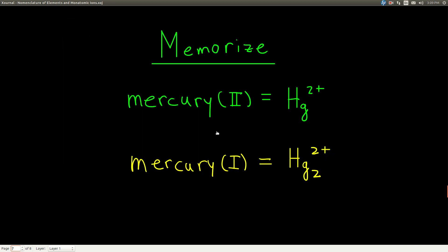There is one exception you just have to memorize, and that's mercury. Mercury(II) is just what you'd think - a mercury atom with a positive two charge; it lost two electrons. However, mercury(I) is strange. It is not Hg with a plus one charge. Rather, there are always two mercury atoms together - kind of like a diatomic cation. Each mercury atom has a plus one, so overall there's a plus two charge. You will not see Hg⁺ - that's wrong. If it's mercury(I), it will always be Hg₂²⁺. Just memorize that.